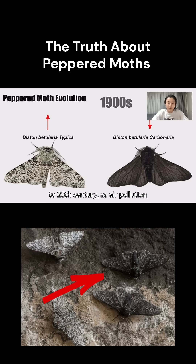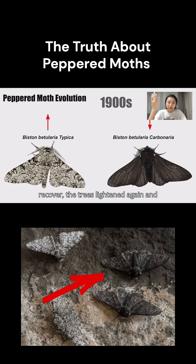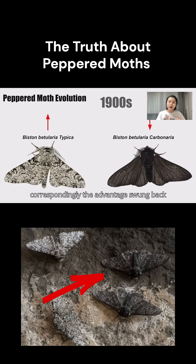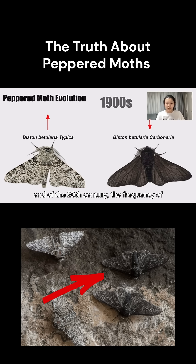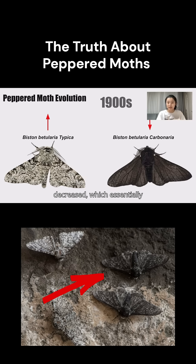Fast forward to the 20th century: as air pollution controls were implemented, habitats essentially began to recover, the trees lightened again, and correspondingly, the advantage swung back to the light-colored morphs. By the end of the 20th century, the frequency of the dark-colored moths had significantly decreased, which essentially illustrates a reverse shift in natural selection trends.